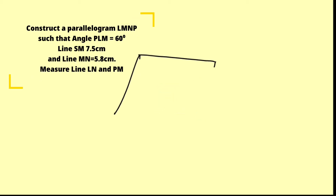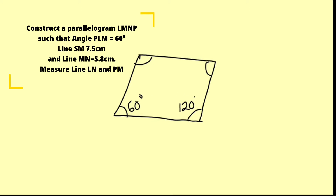A parallelogram looks something like this. Remember, all opposite sides are equal and parallel. The angle given to us is 60 degrees, so it must be one of the acute angles, because the larger angle would be 120 degrees — since adjacent angles add up to 180 and opposite angles are equal. Angle PLM is 60 degrees, so this vertex is P, this is L, this is M, and therefore this is going to be N.